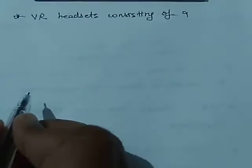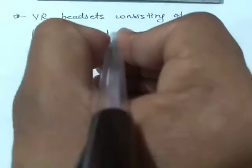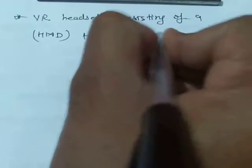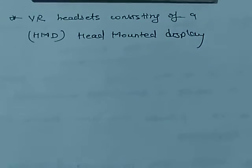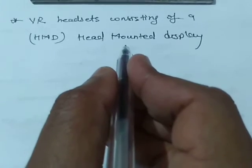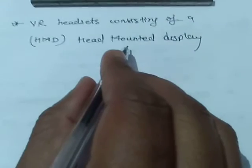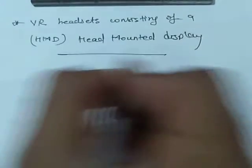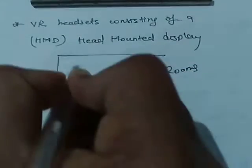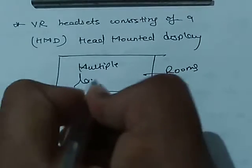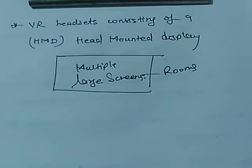The effect formerly created by virtual reality headsets consists of a HMD, that is head mounted display, with a small screen in front of the eyes. But it can also be created through specially designed rooms with multiple large screens, providing a simulation environment.